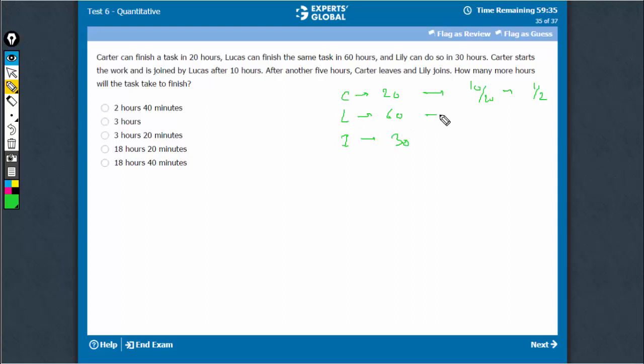Now, Lucas joins. For 5 hours, they work together. 5 into 1 upon 20 plus 1 upon 60, that is, take 60 common, 3 plus 1, 4 into 5, 20 upon 60. So another one-third of work is done.